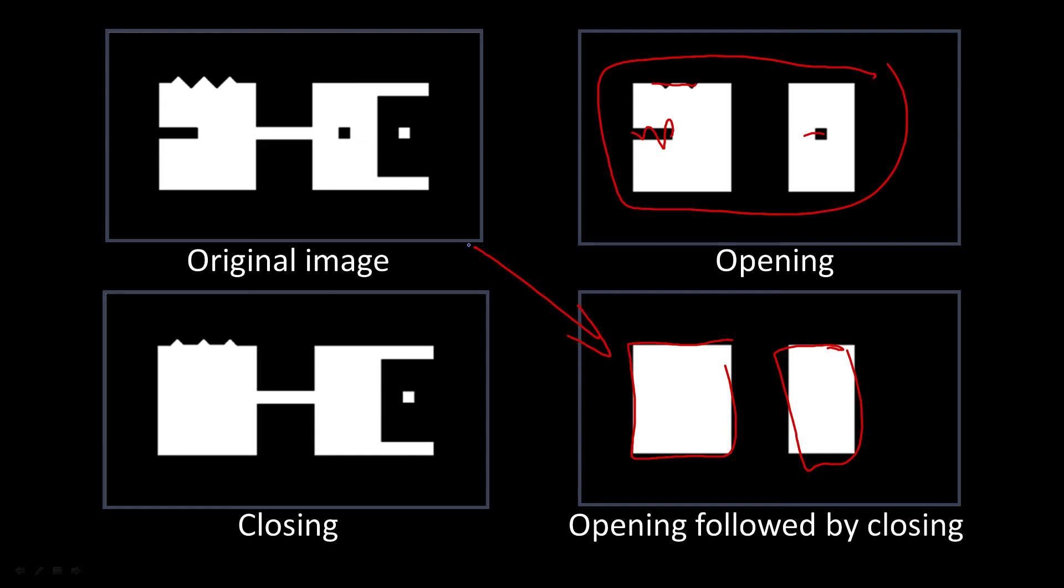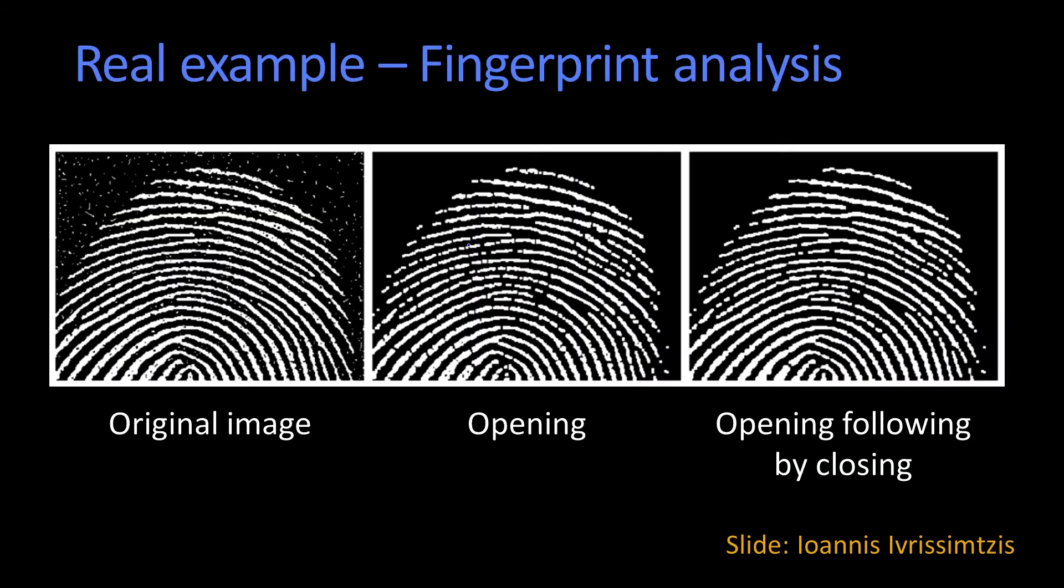And these kinds of operations are what we use often. So to show you a real life example of that, here's a fingerprint example. Here's the original image, you have the ridges that you want to find. There's a whole bunch of spots you don't want to find, there are some gaps that are not real. And so what they do is they apply an opening followed by a closing, and you get this really nice fingerprint image. So that's an example of doing it for real.